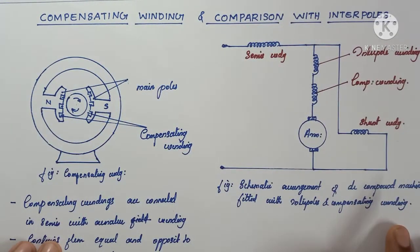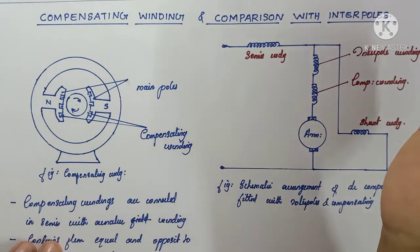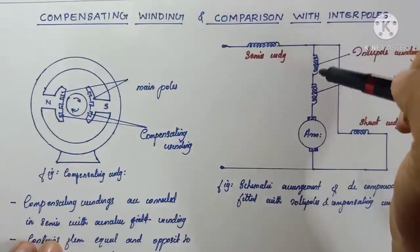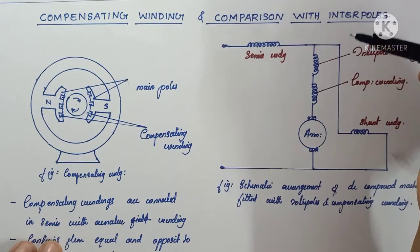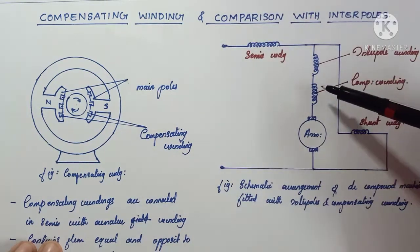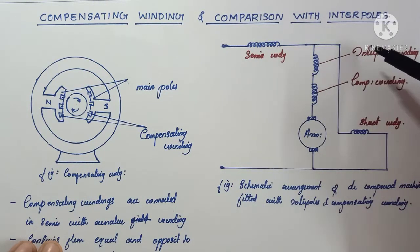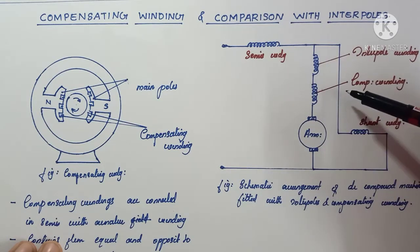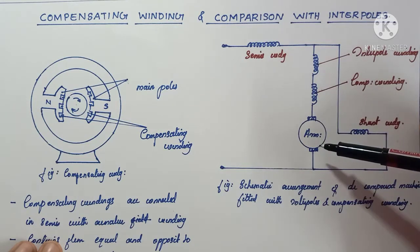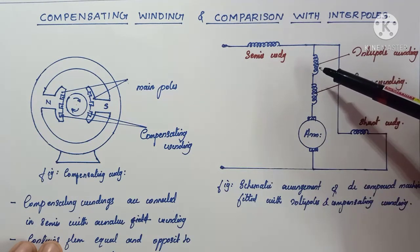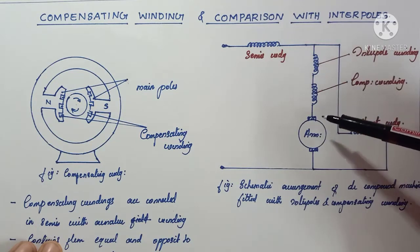Interpoles are able to provide equal and opposite voltages in order to oppose the reactance voltage produced during the short-circuit period. As shown in the figure, the interpole windings and compensating windings are both connected in series with the armature windings, and they carry MMFs which are opposite to that of the armature MMFs.